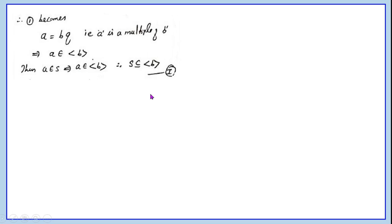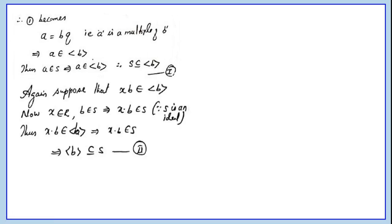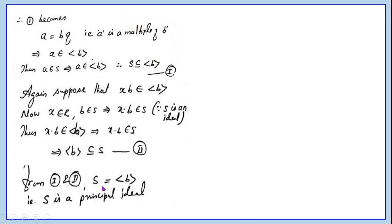Now we have to show that ⟨b⟩ is a subset of S. Suppose XB belongs to ⟨b⟩. Now X belongs to R and B is from S. Therefore X times B belongs to S, since S is an ideal. That is, every element in ⟨b⟩ is in S. Therefore ⟨b⟩ is a subset of S. Let us call this 2. So from 1 and 2, we see that S equals ⟨b⟩.